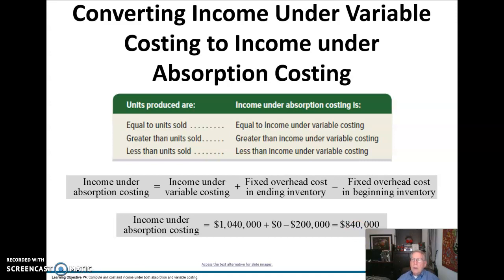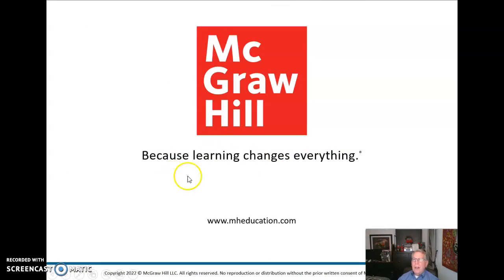When you're doing this homework and other calculations in this chapter, be sure you understand why there is a difference between full absorption costing and variable costing. It's always going to be related to the fixed cost in ending or beginning inventory. That is the end of chapter 18, and when we come back, we will do our very last chapter — chapter 24 — on which we will not be tested. But it's great information for you to know as MBA students. Until that time, bye for now.